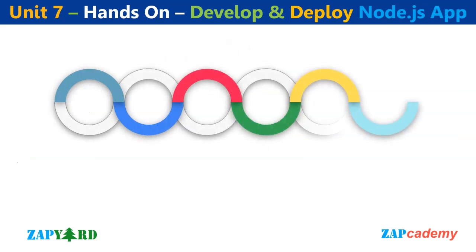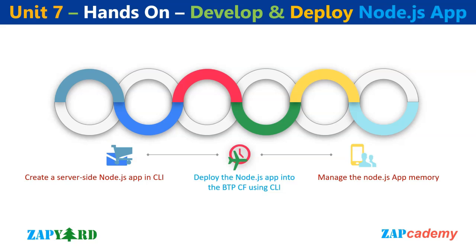Unit 7 will be one of the most exciting hands-on sessions of this course. Participants will develop and deploy a Node.js application on SAP BTP Cloud Foundry. Don't worry if you lack knowledge of Node.js — the instructor will guide you line by line through development. All participants will generate a server-side Node.js application using the CLI (Command Line Interface). Although CLI may seem daunting to ABAP developers, the instructor will patiently lead you through each line of code and help you understand where to find additional commands. We will also learn how to manage the Node.js application's memory.